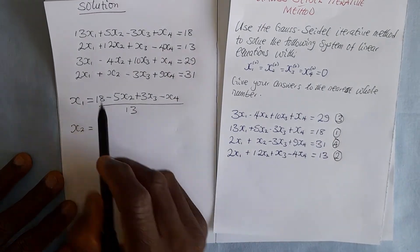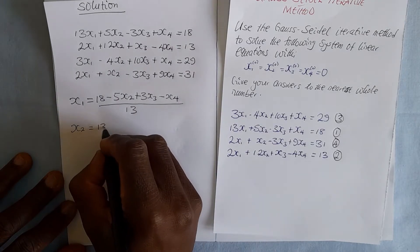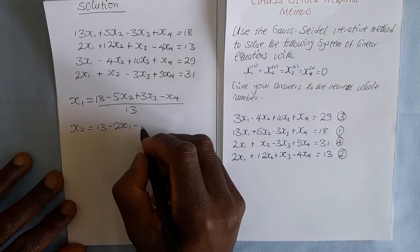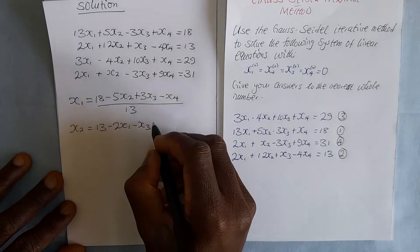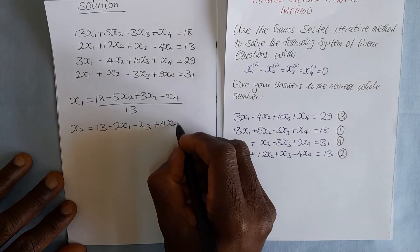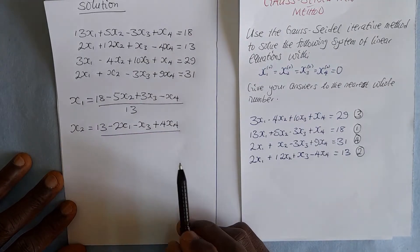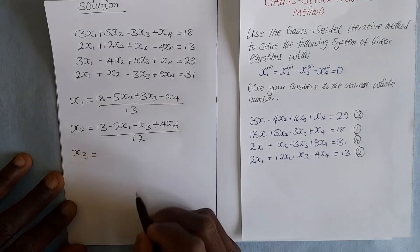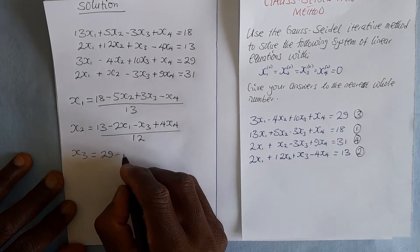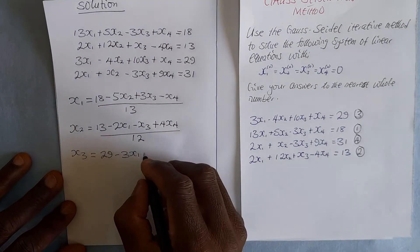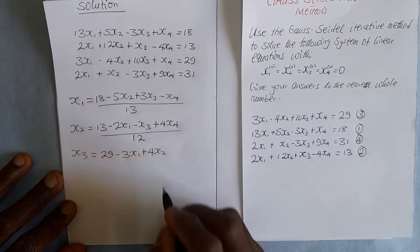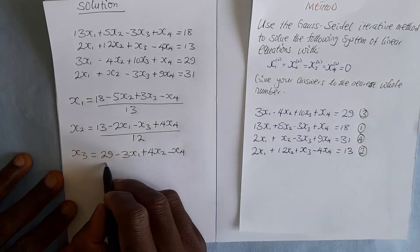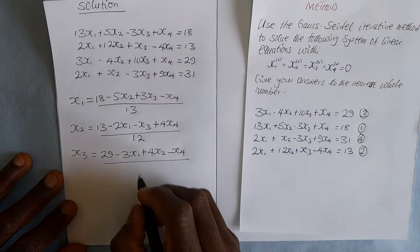Making x2 the subject from equation 2: x2 = (13 − 2x1 − x3 + 4x4) / 12. Then making x3 the subject: x3 = (29 − 3x1 + 4x2 − x4) / 12.